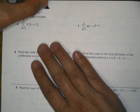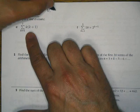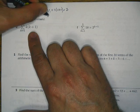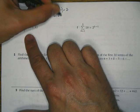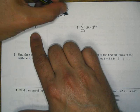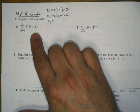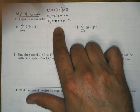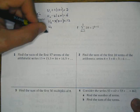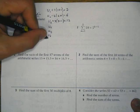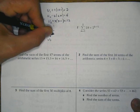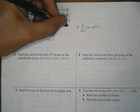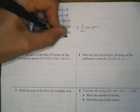When K equals 1, we've got 1 times 1 plus 1, which gives me 2. When K equals 2, I'm going to have 2 times 2 plus 1, which is equal to 6. When K equals 3, we've got 3 times 3 plus 1, so 3 times 4 is 12, and so on. U sub 4, U sub 5, U sub 6, U sub 7 — and you do the same process and you get 20, 30, 42, and 56.